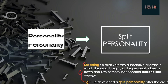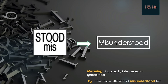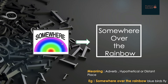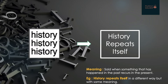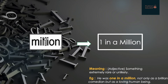In the second word, 'miss' is present inside 'understood', so it would be 'misunderstood'. Next, a rainbow is present and 'somewhere' is written on the rainbow, so it can be 'somewhere over the rainbow'. Next, the word 'history' is written again and again — it's repeating — so it could be 'history repeats itself'.